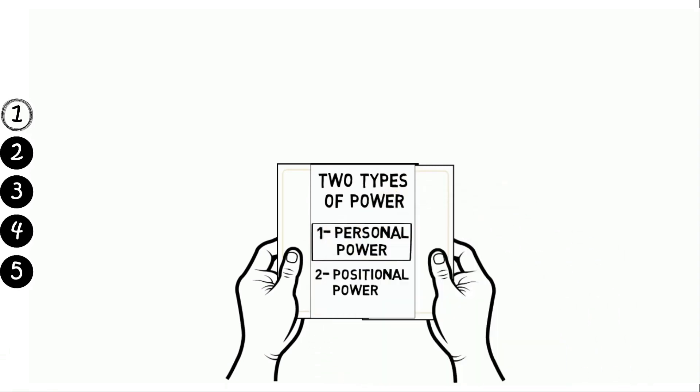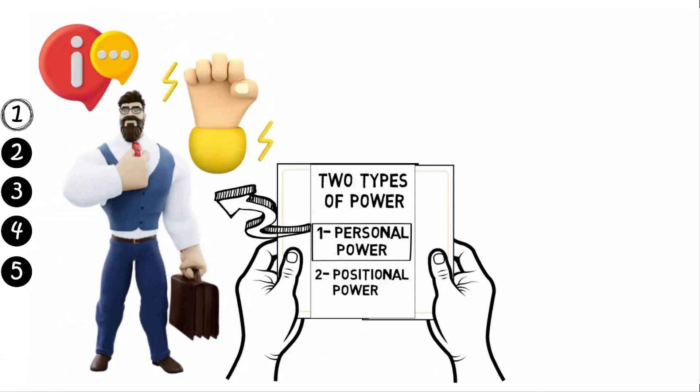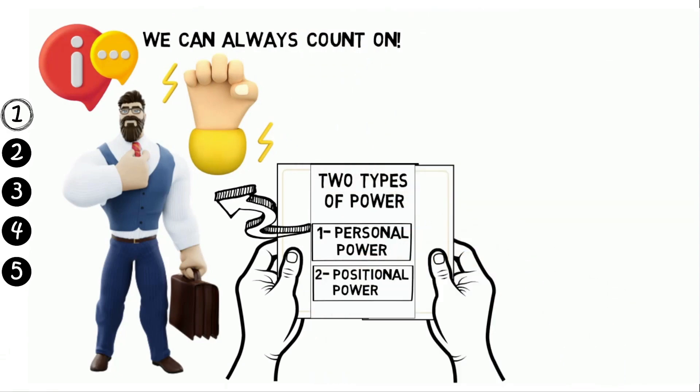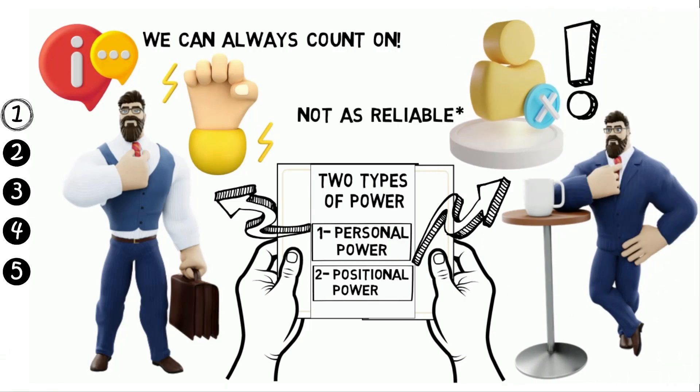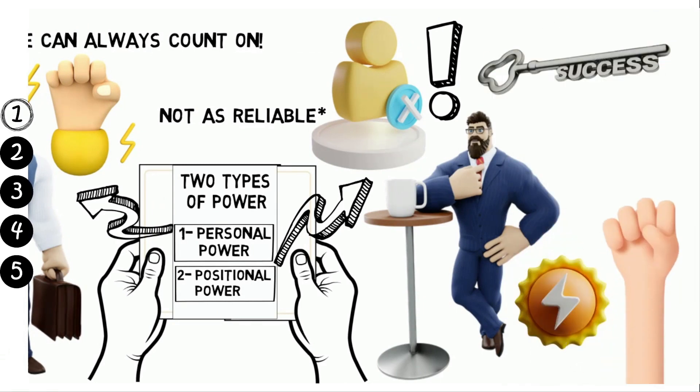Personal power is the power we have over ourselves, and it's the most important type of power because it's the only kind of power we can always count on. Positional power is the power we have based on our position in life, and it's not as reliable because it can be taken away from us. Robbins concludes by saying that the key to success is to increase our personal power so that we can always achieve our goals.